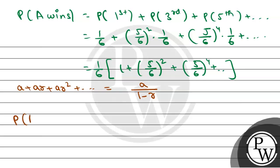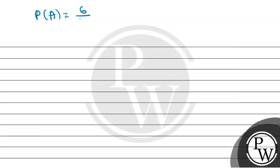So P(A wins) equals 1/6 multiplied by 1 divided by [1 minus 25/36]. If we solve this, we get 6/11. Probability of A wins is 6/11, and similarly probability of B equals 1 minus probability of A, which equals 5/11.